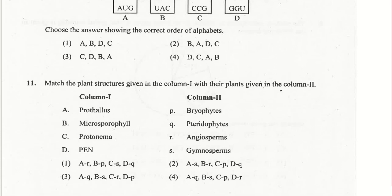Match the plant structures: prothallus is found in pteridophytes; microsporophyll in gymnosperms; protonema in bryophytes; and primary endosperm nucleus in angiosperms. The right answer for question 11 is the fourth option.